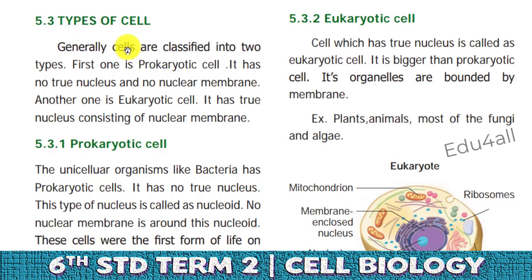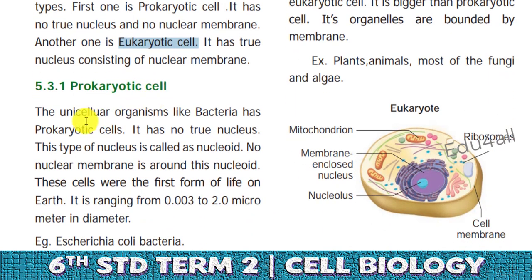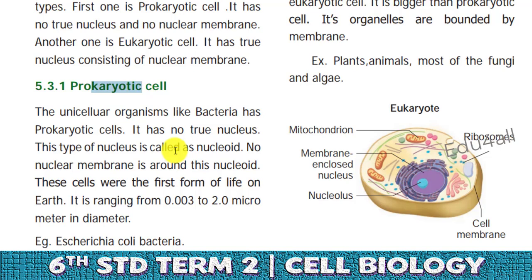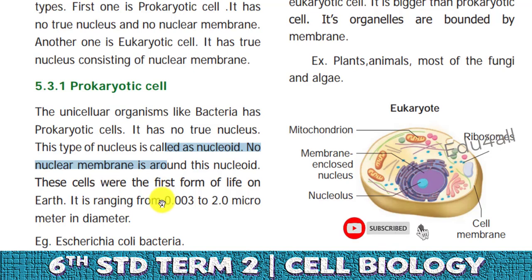The cells are majorly classified into two types: prokaryotic cells and eukaryotic cells. Prokaryotic cells are mostly unicellular organisms, just like bacteria. They don't possess a true nucleus. 'Karyon' means nucleus and 'pro' means before, so these organisms are formed before the formation of a true nucleus. They are unicellular in nature and were the first cells formed on Earth. After the big bang theory, life formed with prokaryotic organisms. Their size ranges from 0.03 to 2.0 micrometers.